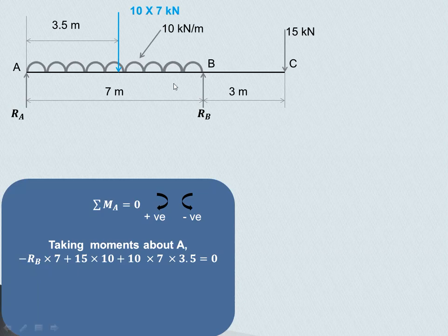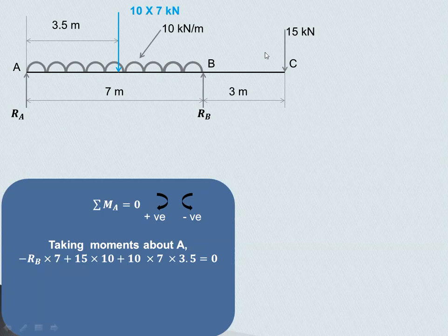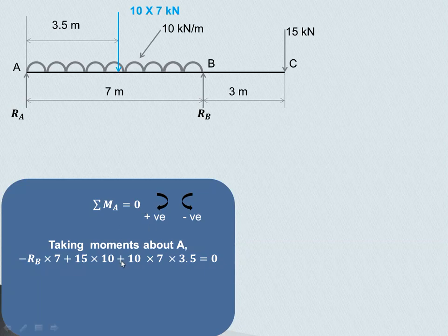We convert the UDL load into a point load: 10 into 7 equals 70 kN, acting at the center of the 7-meter length, that is at 3.5 meters from A. The point load of 15 kN at C produces a clockwise moment; the perpendicular distance from C to A is 3 plus 7 equals 10 meters, so the moment is 15 into 10. The UDL also produces a clockwise moment: 10 into 7 into 3.5. Both clockwise moments are taken as positive.